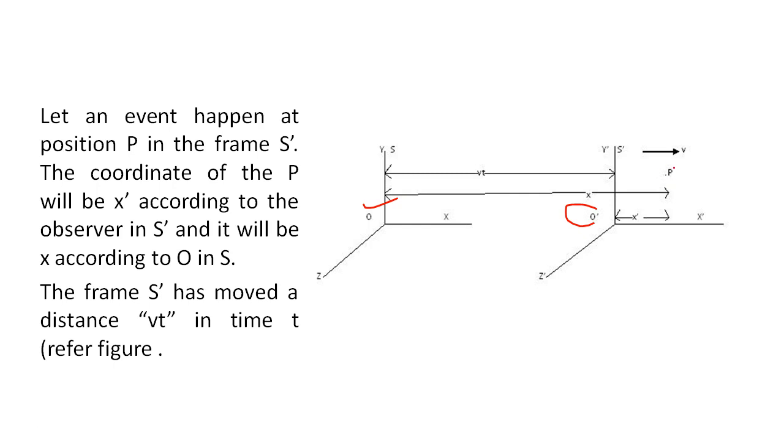P is the position where the event occurs. X dash is the coordinate of the event from frame S dash. X is the coordinate from frame S. And Vt is the difference between the two frames, that is S and S dash.